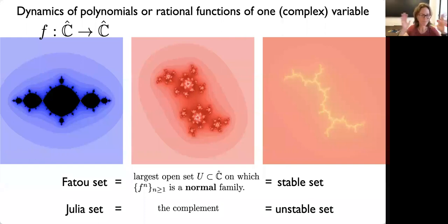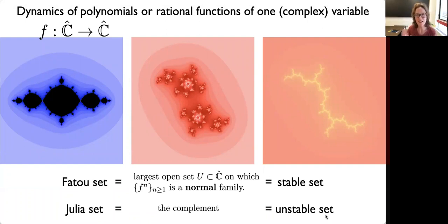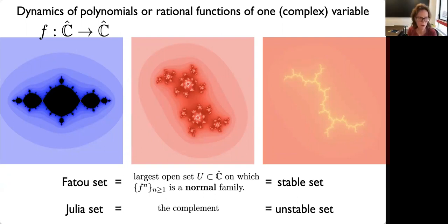In complex dynamics, in the study of dynamics of a function of one complex variable, the basic thing we do is break our space into two parts: the Fatou set and the Julia set — a basic decomposition of either the complex plane or the Riemann sphere. Roughly, the Fatou set is a large open subset where the dynamics are stable, and the Julia set is what we call the unstable set, its complement. These names are a tribute to Fatou and Julia, who initiated the study of the iteration of this type of function. Don't worry too much about these definitions — I won't actually need them for this talk.